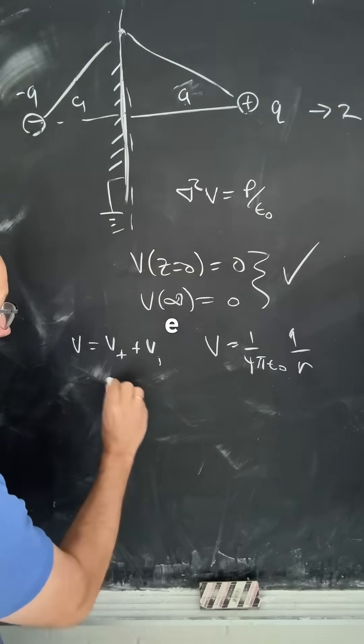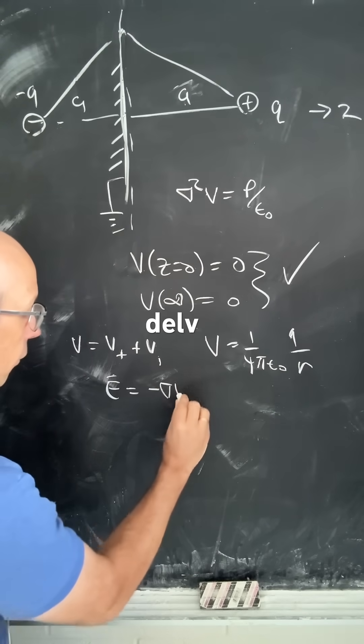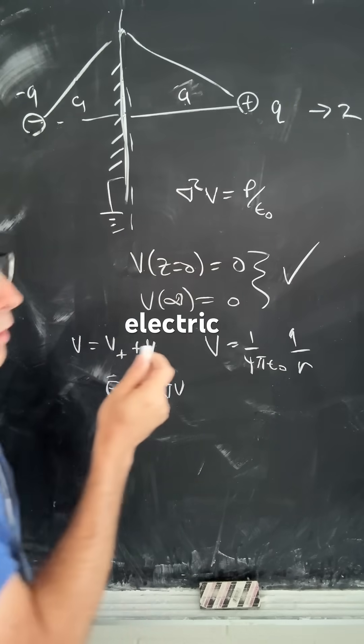Remember, the electric field E is just going to be negative del V, and so I can find the electric field everywhere too.